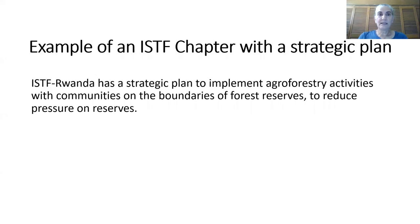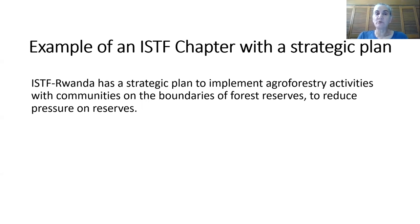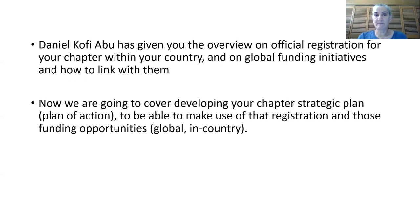An example of an ISTF chapter with a strategic plan is the one in Rwanda, which has a plan to implement agroforestry activities with communities on the boundaries of forest reserves to reduce pressure on those reserves.